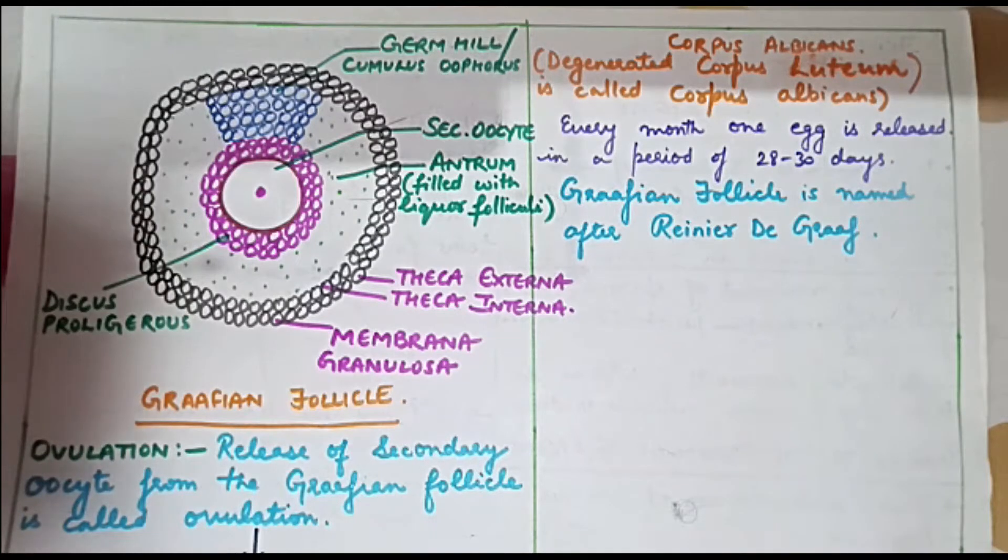Finally in one month one Graafian follicle is formed. The structure of Graafian follicle is as shown in this diagram and we will discuss it here.